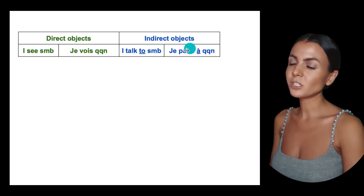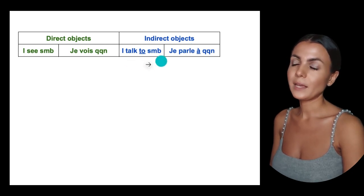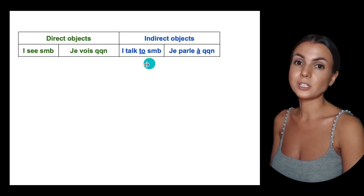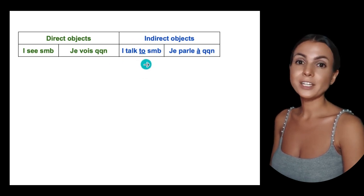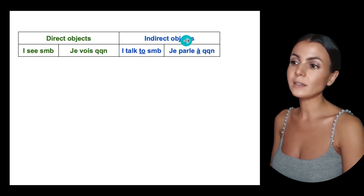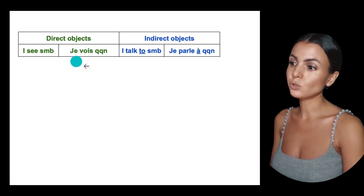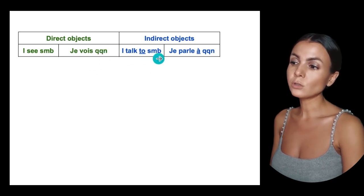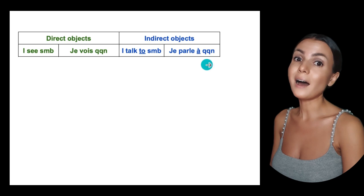And indirect objects — you see here — 'I talk to somebody.' Between the verb and the object, there is a preposition. In French, we have the same thing: direct objects and indirect objects. 'I see somebody' — je vois quelqu'un — nothing in between, direct. 'I talk to somebody' — je parle à quelqu'un — indirect.